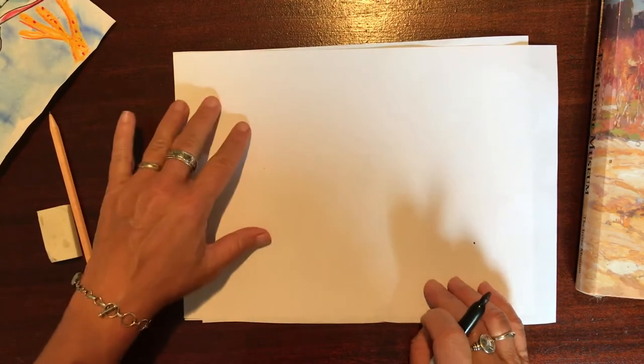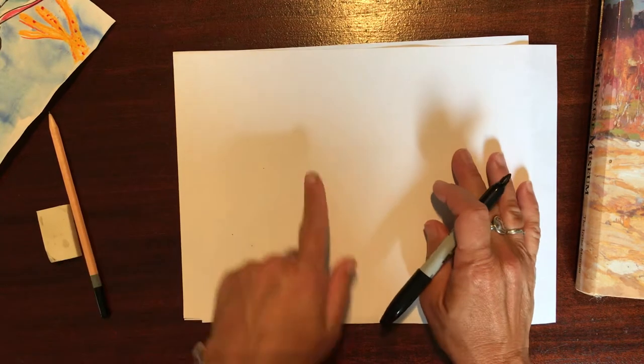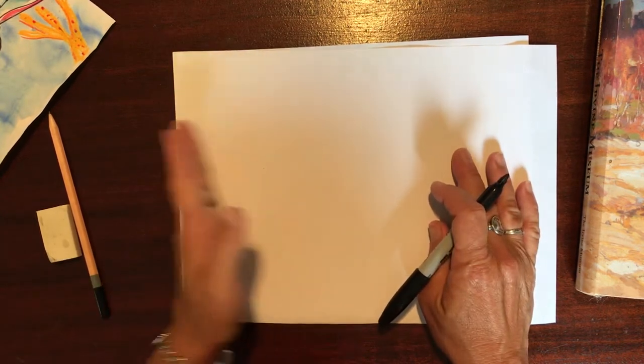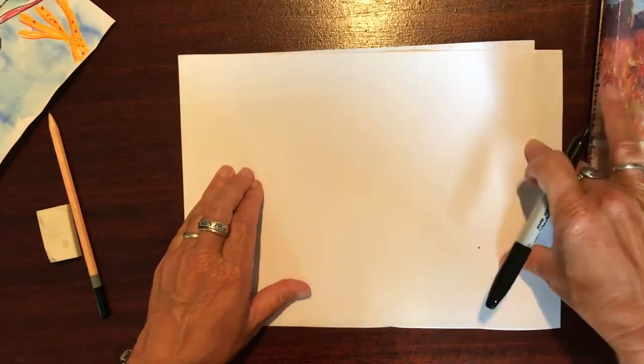So I'm using a smaller paper, and when you start your fish, you want to put your eyeball on the left side and remember to save room for his body and tail.